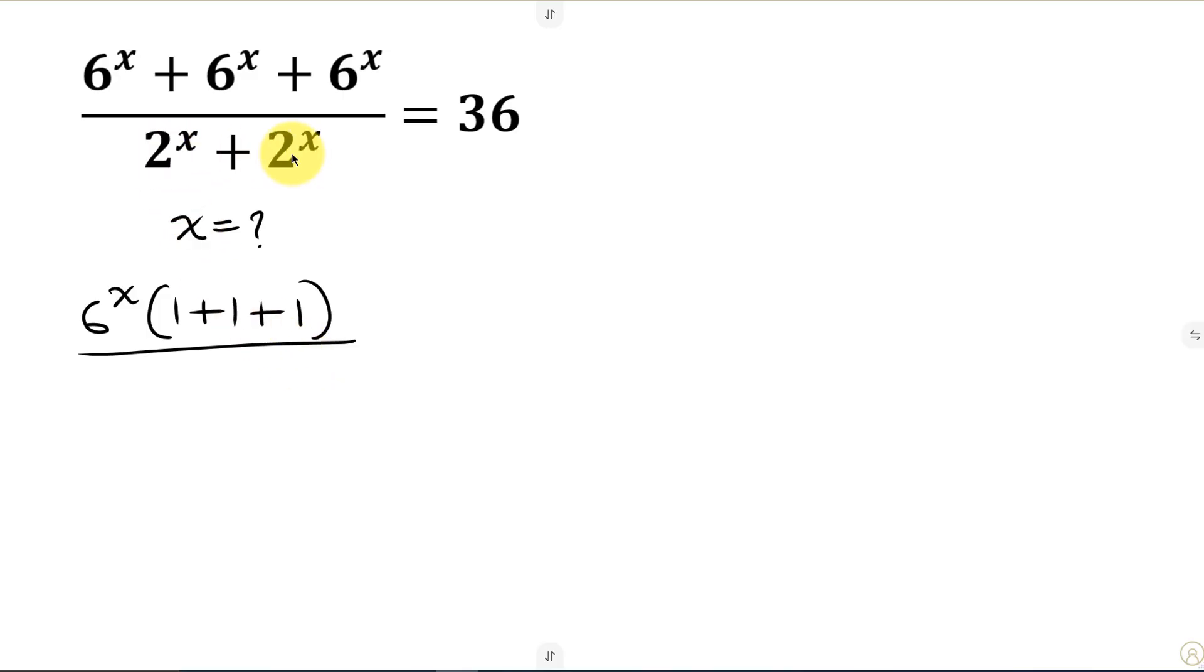Now the denominator, 2 to the power of x is common, so we can factor that out. Open bracket. Now 2 to the power of x divided by 2 to the power of x is 1 plus 2 to the power of x divided by 2 to the power of x is also 1. And this is equal to 36.